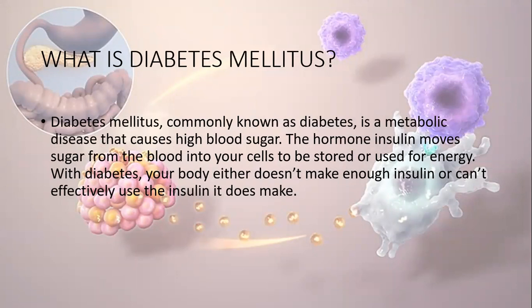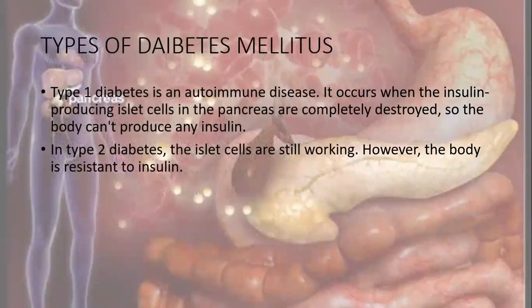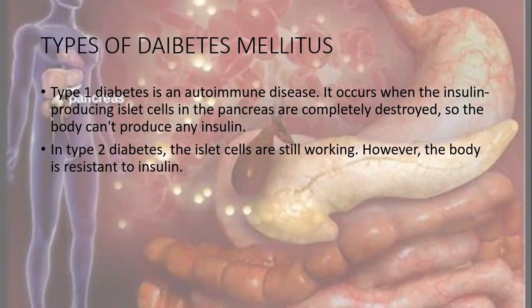Here I will discuss only two types: type 1 and type 2 diabetes. Type 1 diabetes mostly affects children or young adults, as it is an autoimmune disease. It occurs when the insulin-producing islet cells in the pancreas are completely destroyed, so the body cannot produce any insulin. This is characterized by an absolute deficiency of insulin due to the destruction of beta cells. Without beta cells, the pancreas fails to respond to glucose, and a person with type 1 diabetes shows classic symptoms of insulin deficiency, which leads to polydipsia, polyphagia, polyuria, and weight loss.